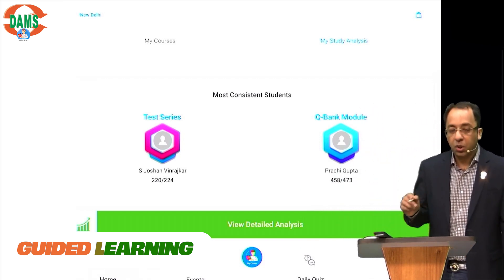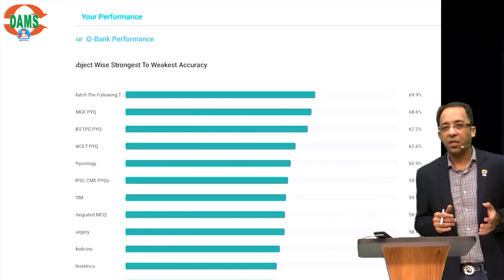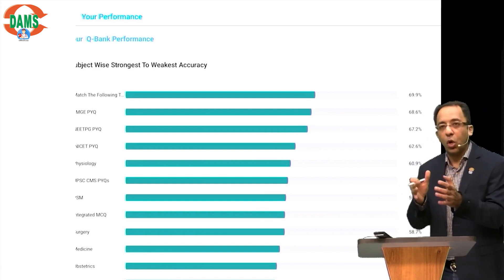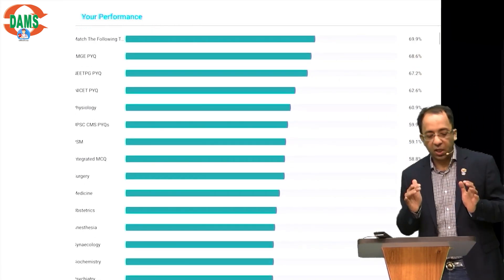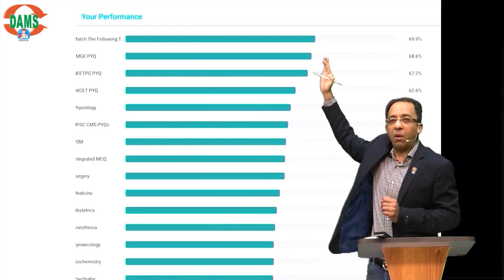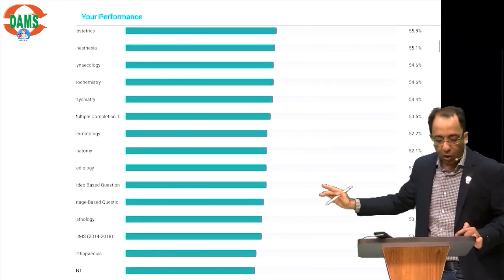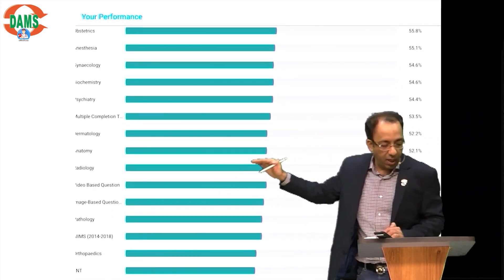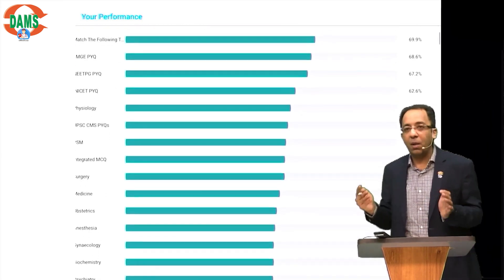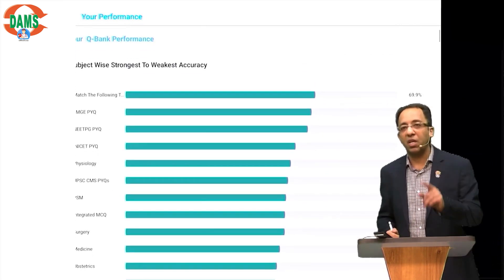Beyond this, for deeper analysis, you'll see a button saying 'View My Detailed Analysis'. When you click it, the first graph you'll see is 'Subject-wise Strongest to Weakest Accuracy Level'. Looking at this student's accuracy, you can see previous year questions are at the top — probably done before. But at a glance I can already see this student appears weak in anatomy, radiology, shorter subjects, and ophthalmology. This graph is the most important — it tells you in your question bank practice which zones you're most accurate in.